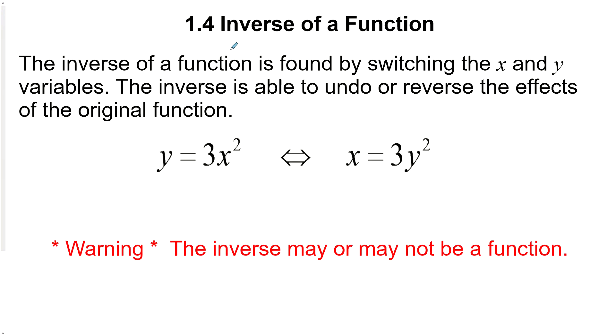1.4 inverse of a function. The inverse of a function is found by switching the x and y variables. The inverse is able to undo or reverse the effects of the original function. More on that at the end. But first, let's look at a simple function here, y equals 3x squared. To find the inverse, we just need to switch x and y. And there it is.